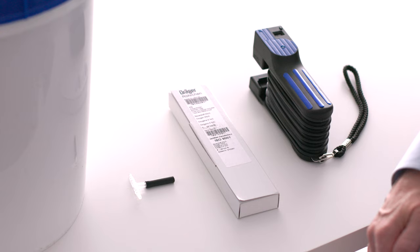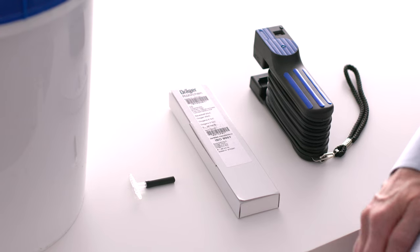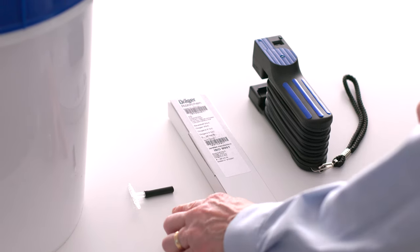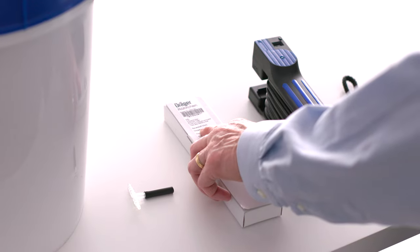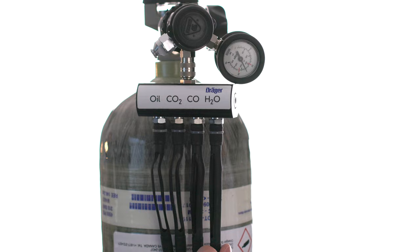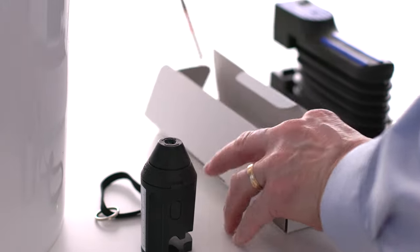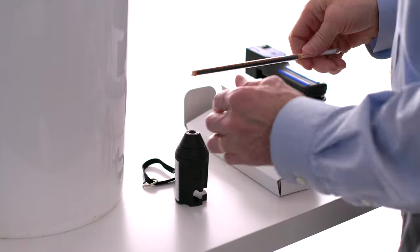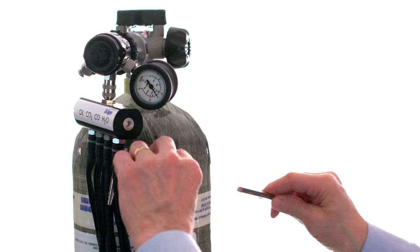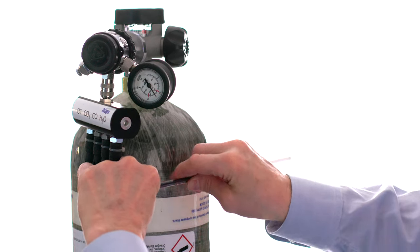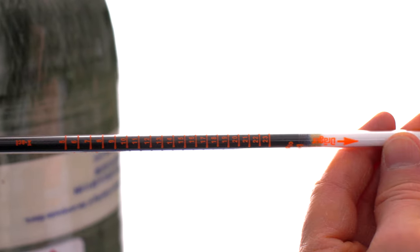The oxygen content of the air may also be determined with the AeroTest using a T-piece, the Oxygen 5% C-tube, and the Draeger Acuro. Connect the T-piece to the H2O holder. Remove the tips of the oxygen tube. Connect the tube to the hose on the T-piece with the arrow on the tube pointing away from the T-piece.